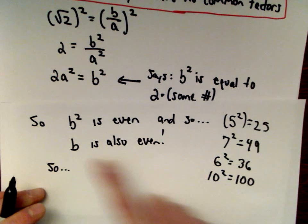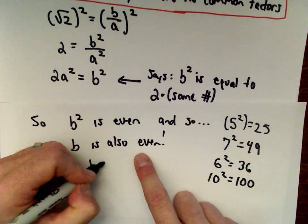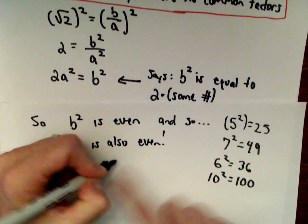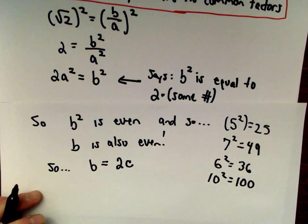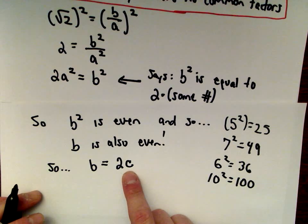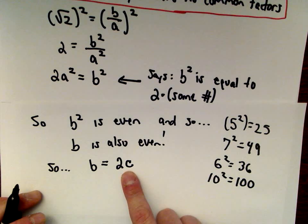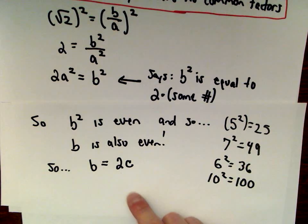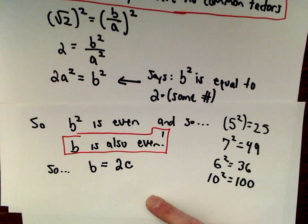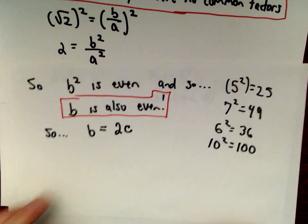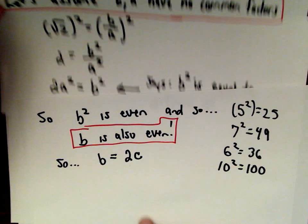Since b is even, that means we can write b as 2 times some number c. A and b are integers, so c is also going to be an integer. So b equals 2 times c.